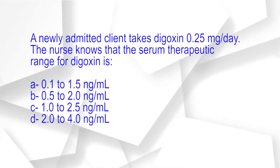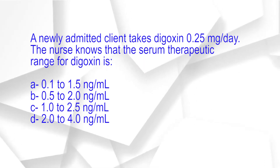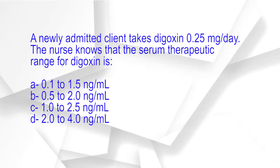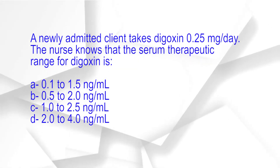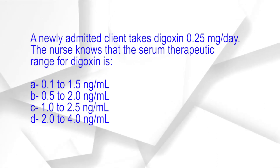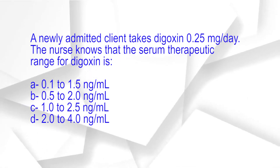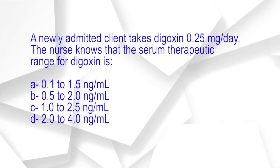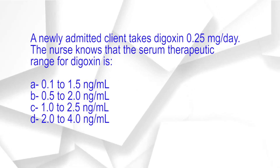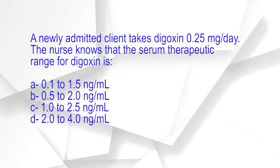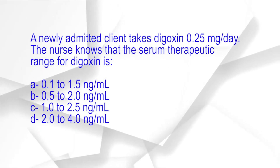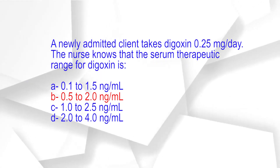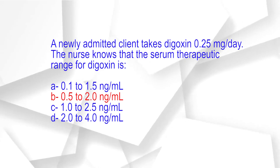A newly admitted client takes digoxin 0.25 mg per day. The nurse knows that the serum therapeutic range for digoxin is: A. 0.1 to 1.5 ng/ml. B. 0.5 to 2.0 ng/ml. C. 1.0 to 2.5 ng/ml. D. 2.0 to 4.0 ng/ml. The correct answer is option B: 0.5 to 2.0 ng/ml.